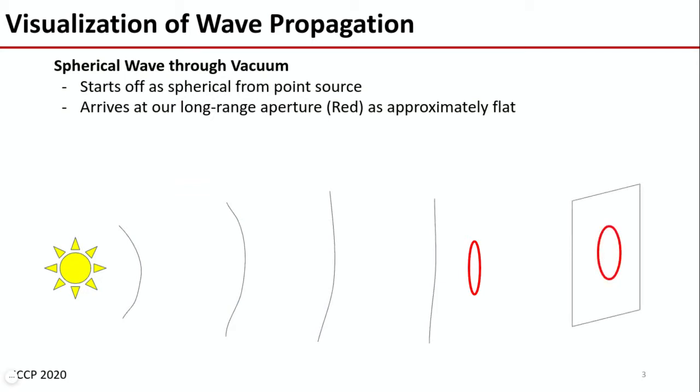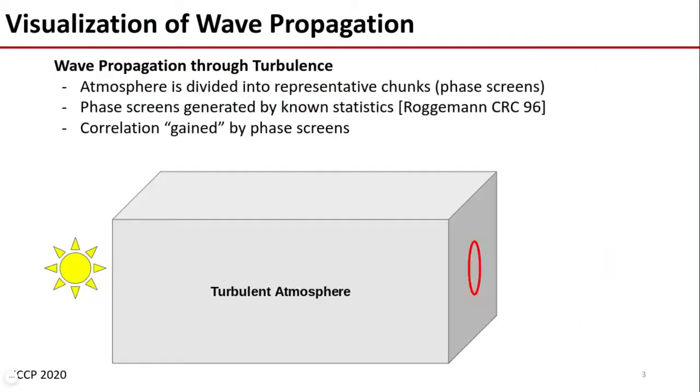In a vacuum, we then have no phase distortions and get a resulting diffraction point spread function.